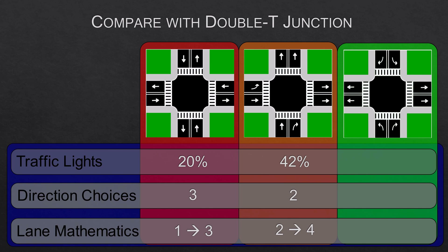This brings us to the double T junction. Here we only have two traffic light phases — one for traffic and one for pedestrians. So if we kept pedestrians to 10 percent, the traffic now gets much closer to 90 percent green light time. We have a choice of two different directions, which is similar to the one-way intersection. Finally, the lane mathematics: when the lights are green, four lanes of traffic can proceed through the intersection at the same time and those four lanes feed into four output lanes. You can probably see that this intersection could be a game changer.